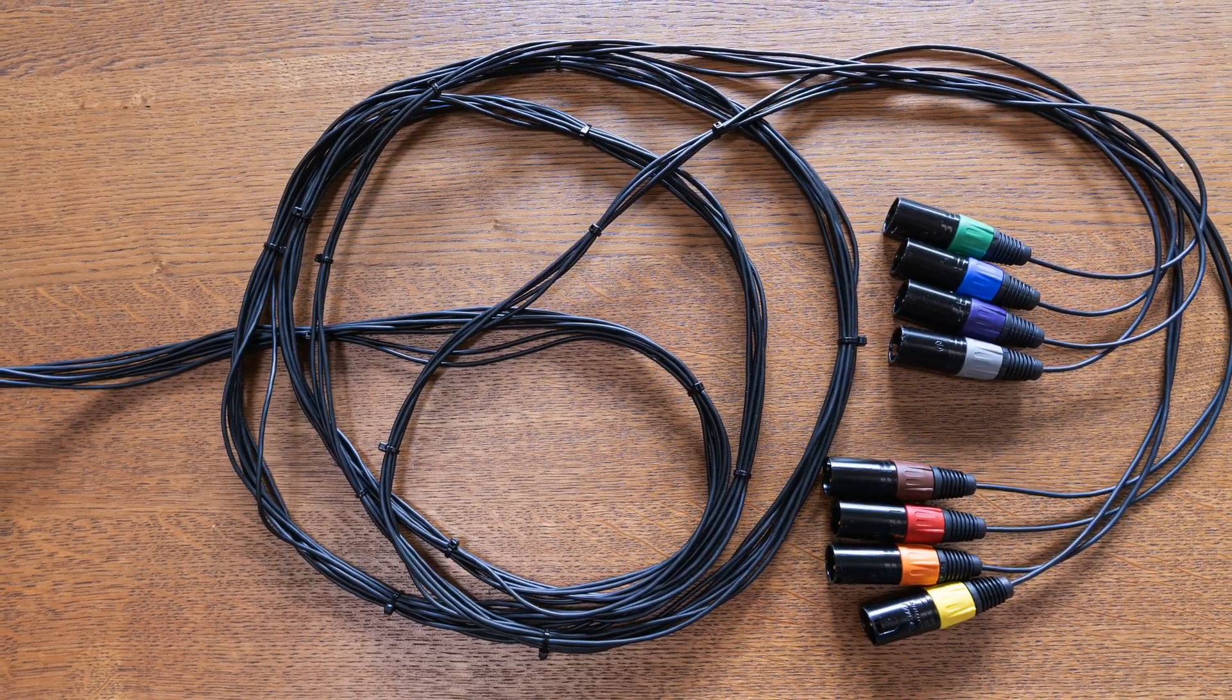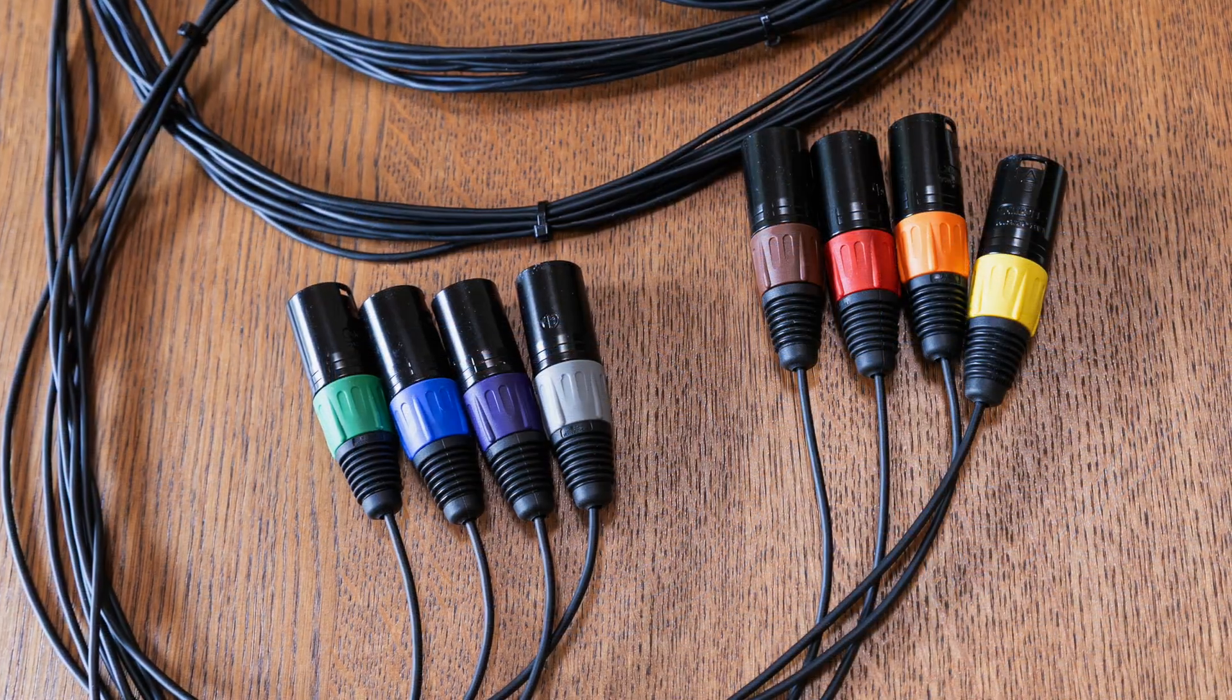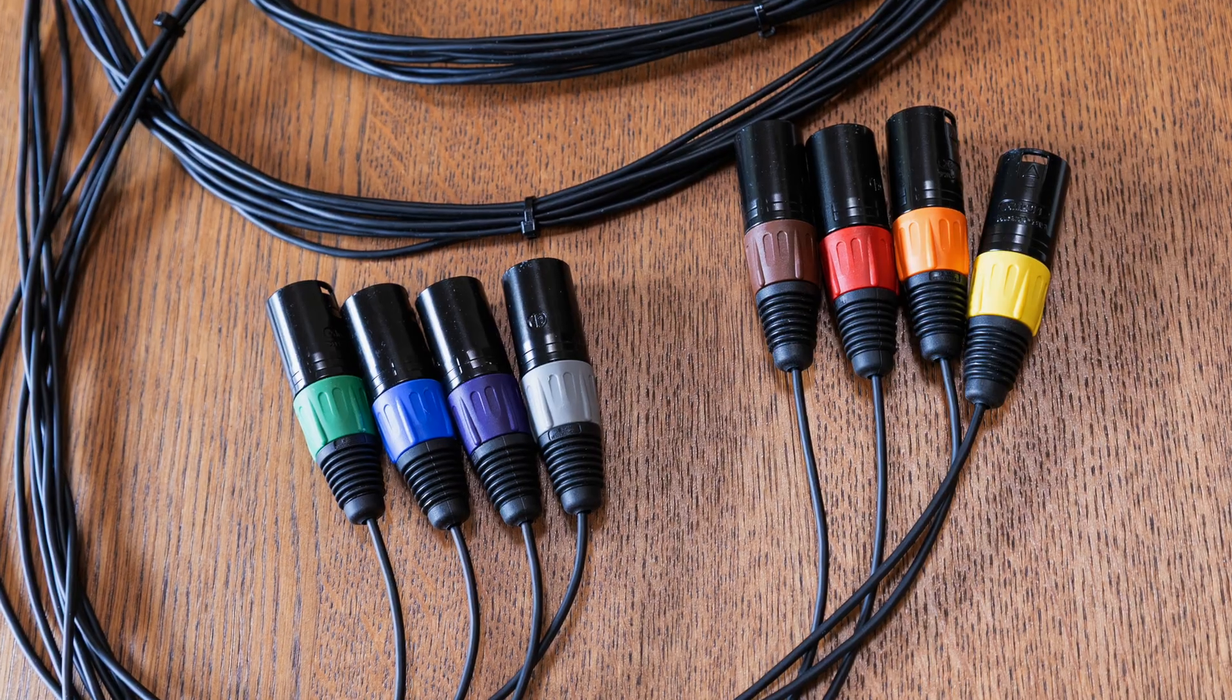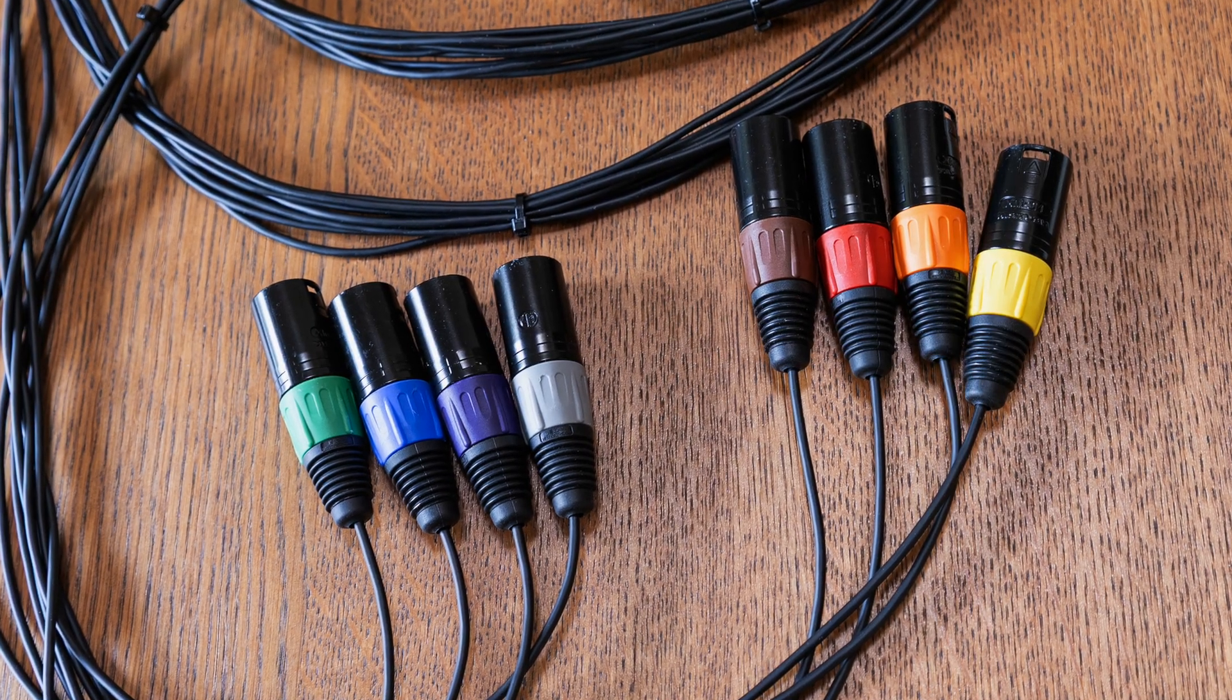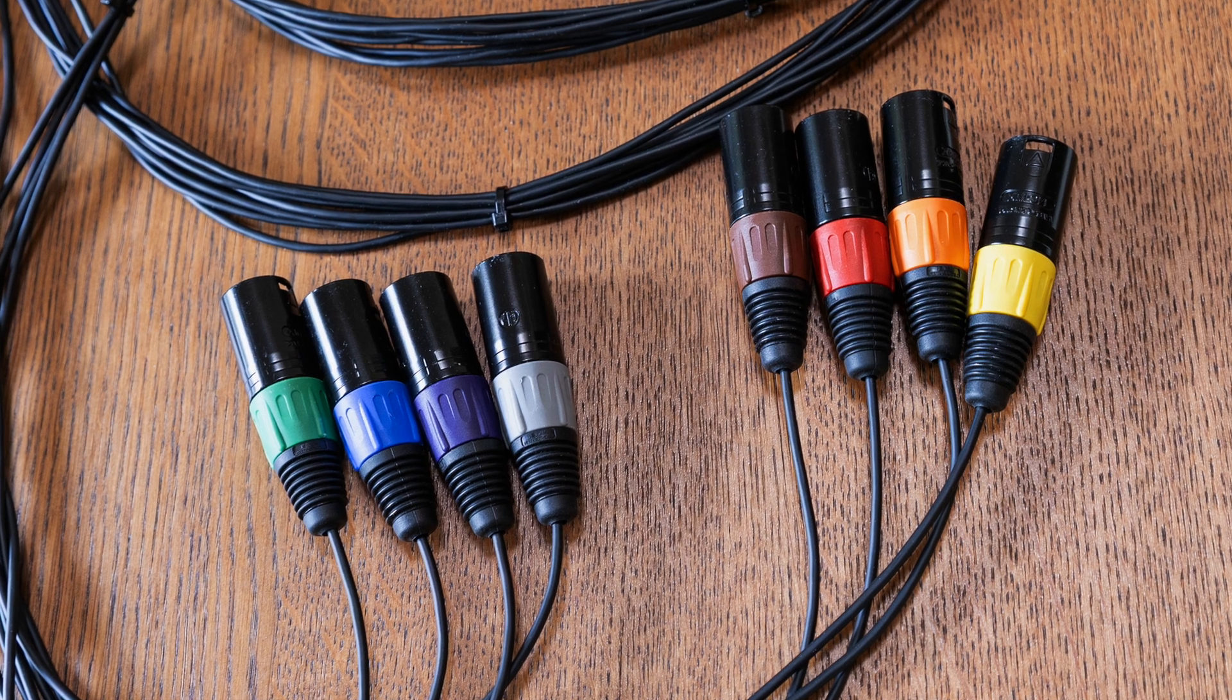Now neatly combine all eight wires into one bundle with a tie wrap. Continue adding tie wraps every eight inches or so until there is about two feet of wire left. Separate out inputs one through four into one bundle of four XLRs. That would be the brown, red, orange, and yellow ones. Tie wrap those together about six inches past the separation. Add one more tie wrap four to six inches from that one.